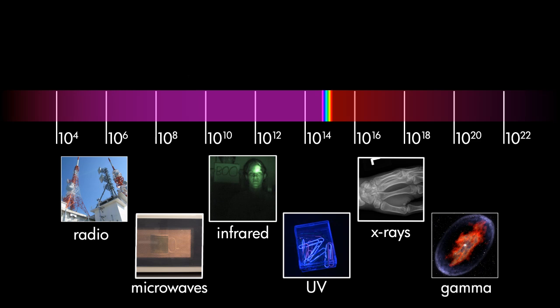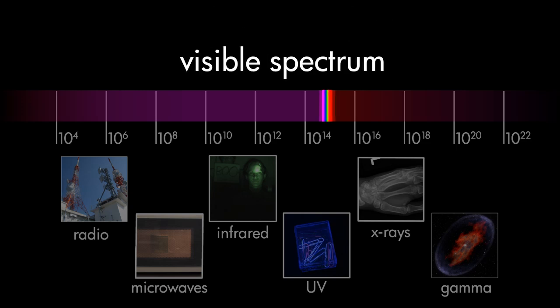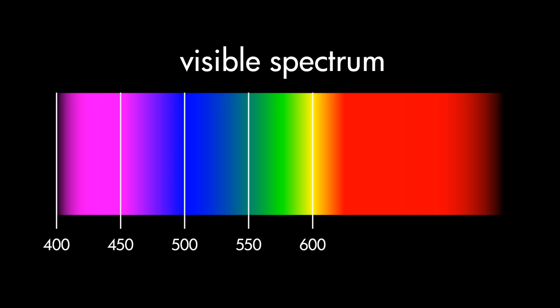All of these waves are invisible to the human eye, except a very small range, which we call the visible spectrum. These visible waves are commonly referred to as light.